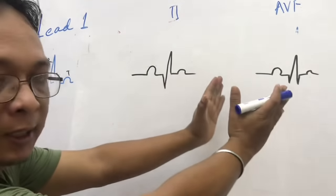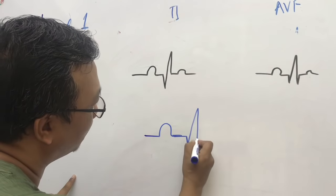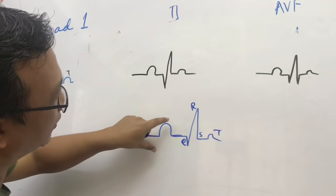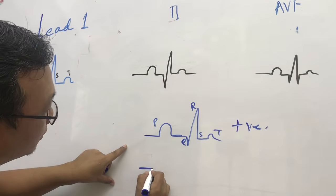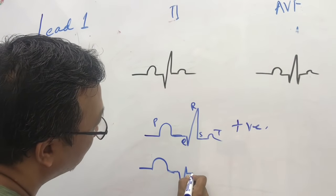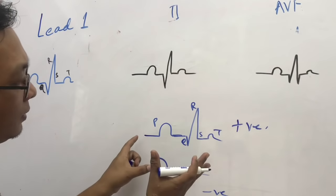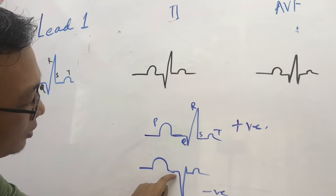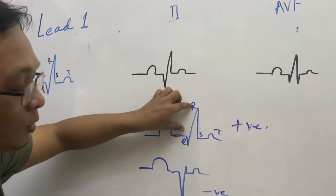In lead 1 you see this wave, in lead 2 this wave, and this is AVF. First, you should know what is a positive wave and what is a negative wave. A positive wave is where the R component is taller than the S component — it rises above the isoelectric line. A negative wave goes below the isoelectric line, as you often see in V1 in a normal ECG.